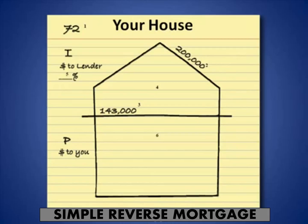Item six is the section below $143,000 — that's all the money reserved for you. A portion of that goes to costs. Item seven, lower left-hand corner, includes the loan origination fees, the mortgage insurance premium to FHA and HUD, appraisals, credit reports, and all those types of things lumped into item seven.